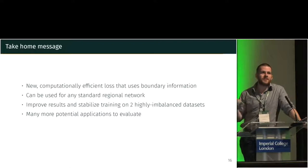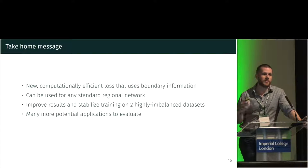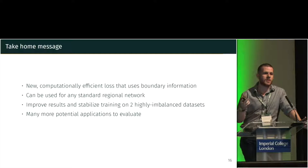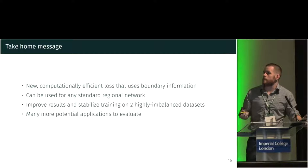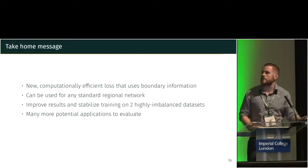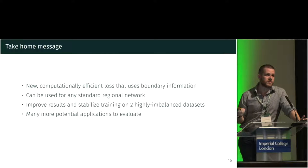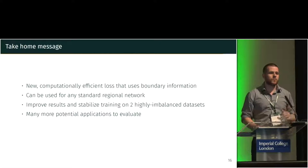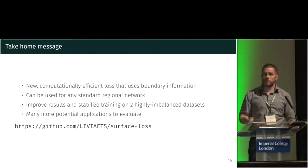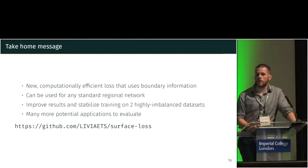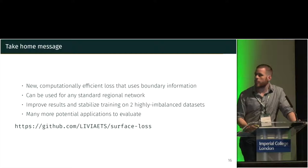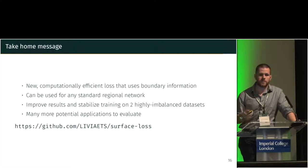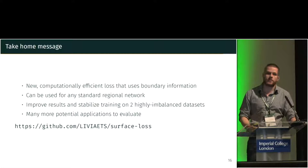The take-home message is that we define a new computationally efficient loss that uses boundary information. That loss can be plugged directly into any fully convolutional neural network without needing to modify the network at all — you can just combine it with your existing losses. We showed it improves results and stabilizes training on two highly imbalanced datasets, and there are many other potential applications that could benefit from this boundary loss. The code is available online, and if you have trouble or questions about how to use it, you can create an issue on GitHub, or ask at the poster session at number OM6.